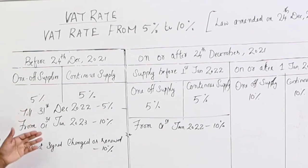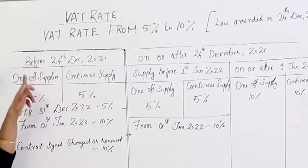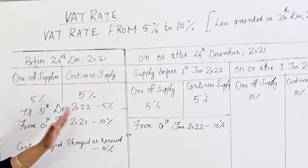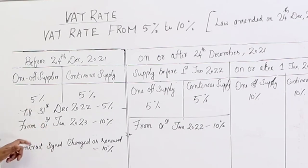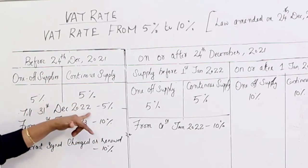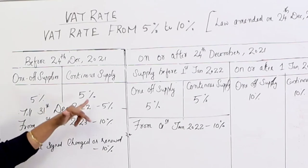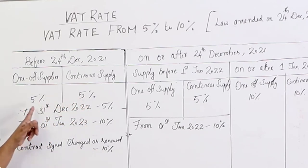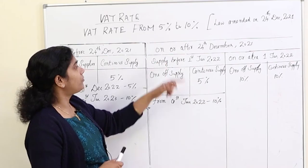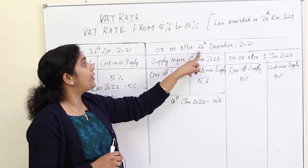For the full year 2022, the rate is 5%. From 1 January 2023, it becomes 10%. These are called standard rated goods and services.